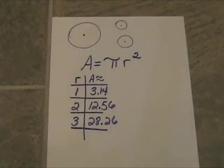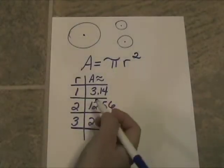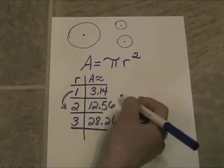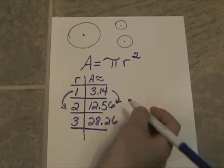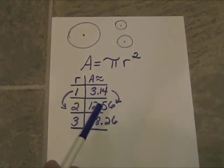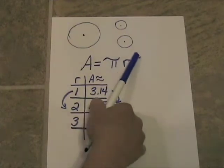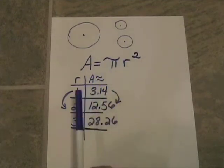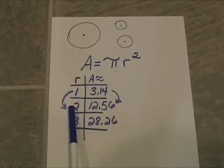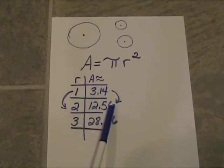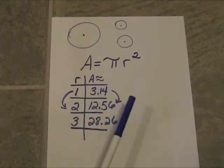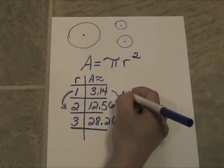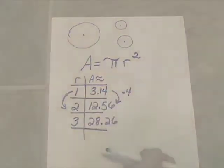Now let's see if there's a relationship here. If we double the radius, the area does not simply double — because the radius isn't there by itself; the radius is being squared. When we double the radius, we're actually quadrupling the area, which is what two squared is — a quadruple. So the area is four times bigger when we double the radius.